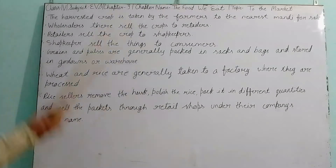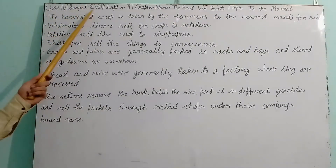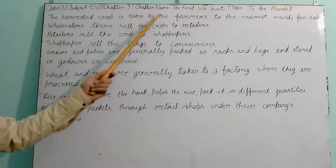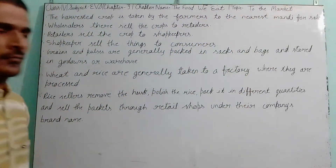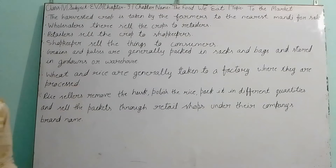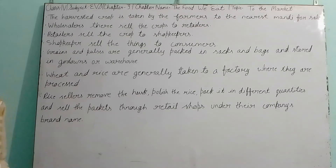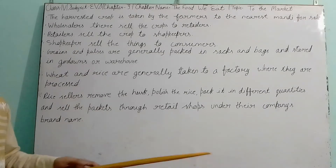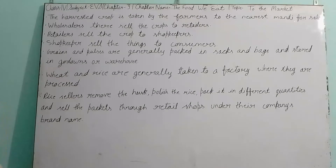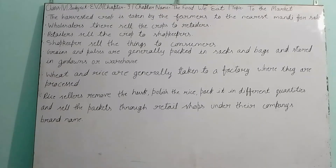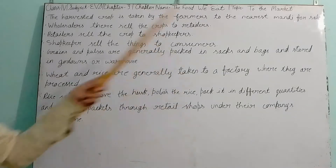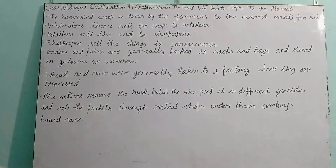Hello students, let's start Class 4 Subject: Areas, Chapter 8 — The Food We Eat, topic: To the Market. In the last class we talked about farming — how farmers grow crops, what activities they do. We also studied that when the crop is ripened, they cut it, harvest it, and store it in the godans or sell it to the market.